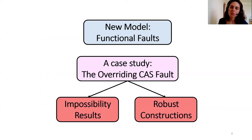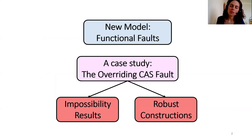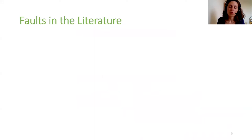In our work, we initiate a study of functional faults by defining formally the functional fault model. Unlike process failures and memory faults, which occur regardless of the behavior of the executing processes, a functional fault happens when the outcome of a certain function does not satisfy its specification. We also demonstrate our model with a specific natural functional fault of the important compare and swap synchronization primitive, which we call the overriding CAS fault. We show constructions and impossibilities in the presence of this functional fault.